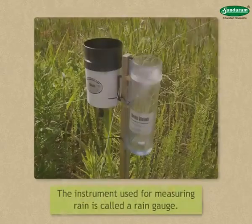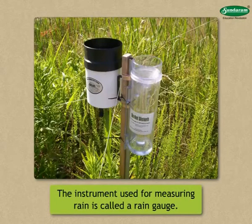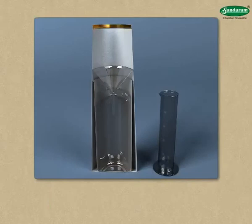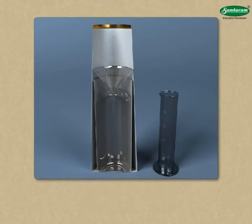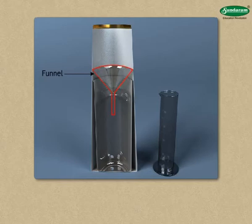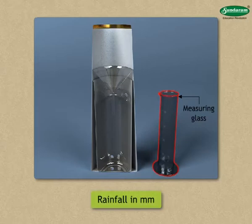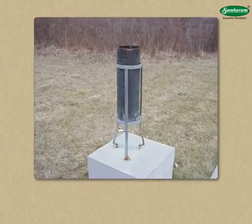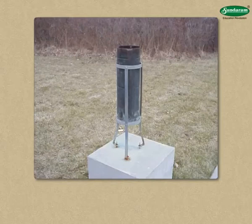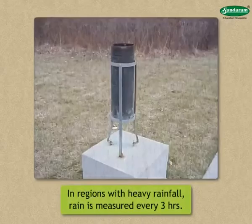The instrument used for measuring rain is called a rain gauge. Different types of rain gauges are used. A rain gauge has a funnel with a specific diameter. The rainwater which falls on this funnel is collected in the bottle of the rain gauge. Water thus collected is measured with a particular measuring glass, which is calibrated to measure rainfall in millimeters. In an observatory, a rain gauge is placed on a raised platform in an open space. The amount of rainfall during the day is measured at a fixed time.